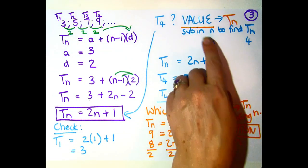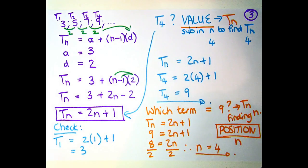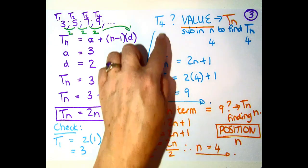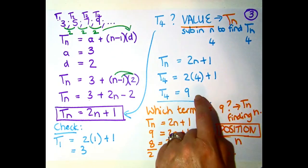The second kind of question you can get is they want the value, and they say, for example, get T4. They want the value of T4. They want the actual term. When they want the actual term, that is the value, and you're going to find it by substituting in the number that they give you that is the position. So they'll give you the position, and they want the value out.